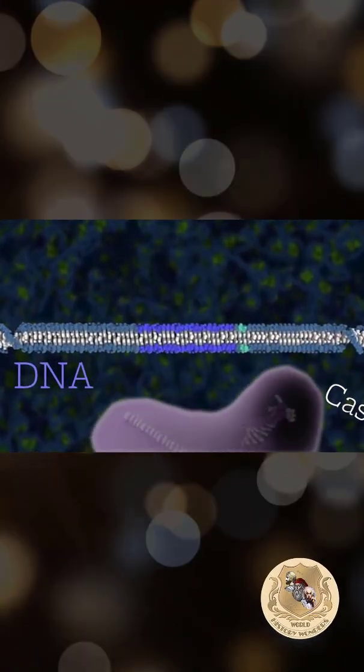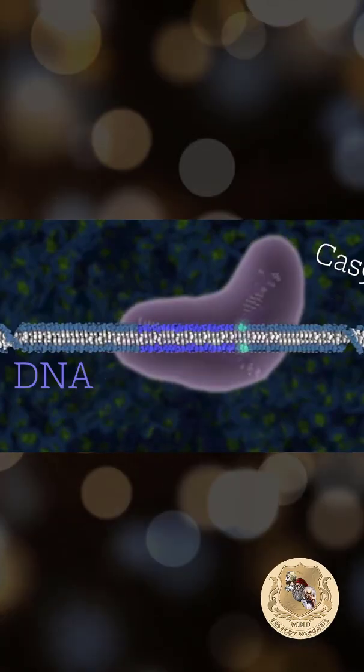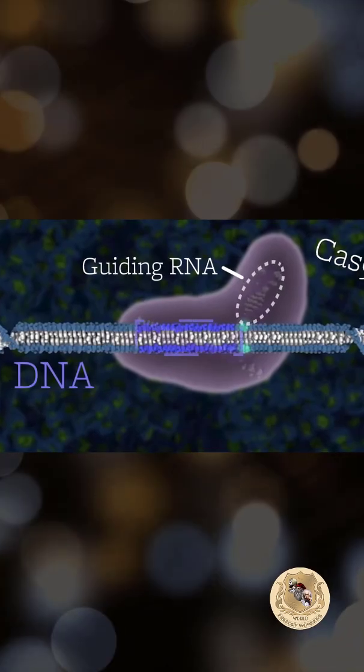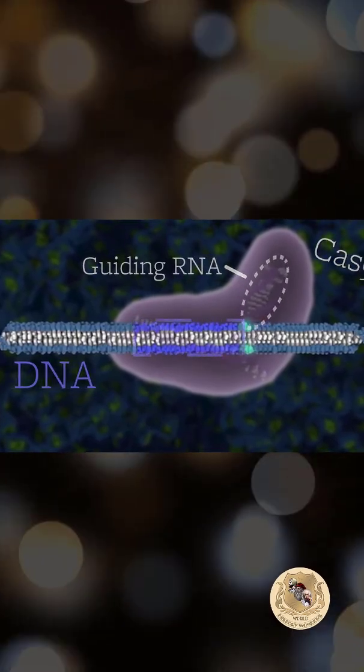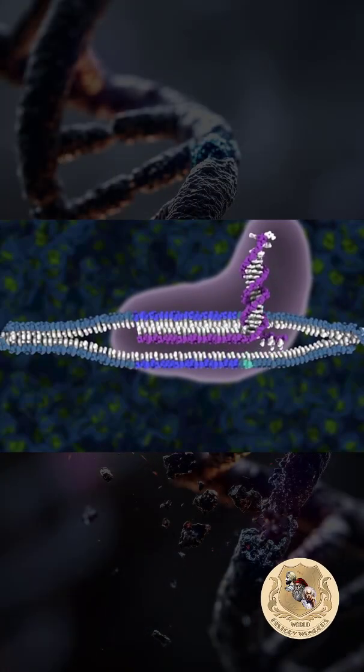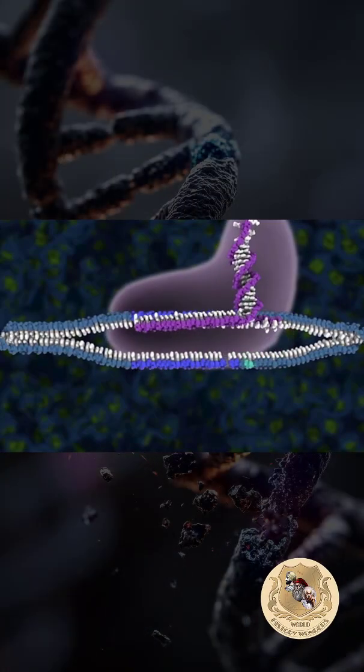For Cas9 to find the malfunctioning DNA, we attach it to an RNA sequence that matches the DNA sequence we want to edit. Then we put this RNA-Cas9 combination into the cell. It finds the mutant DNA and uses the chemical reaction to cut the DNA strand right at the spot where it's malfunctioning.